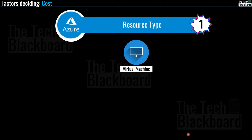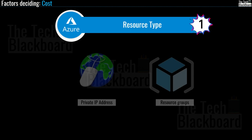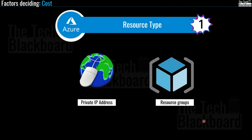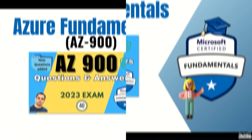You might be thinking: do I have to pay for every resource or service I use, or are there some resource types for which I do not have to pay? Most understandably, there is definitely cost associated with most resources. There are a few exceptions — for example, private IP addresses and resource groups are free. Please pay attention: private IP addresses are free, but not public IP addresses.